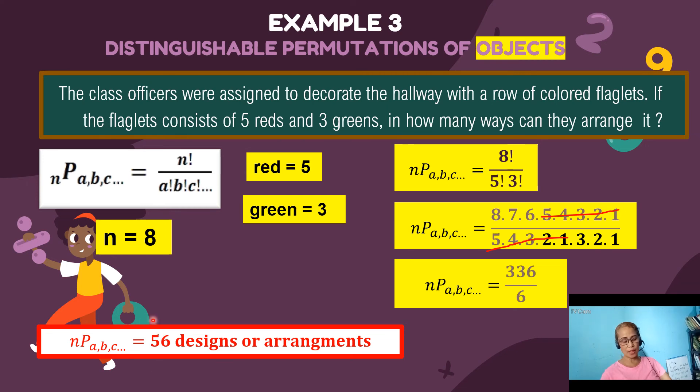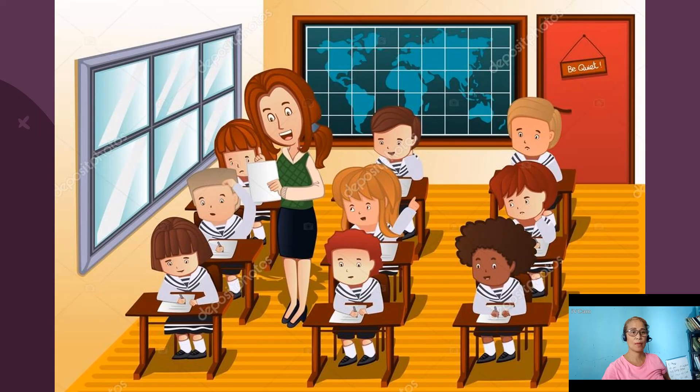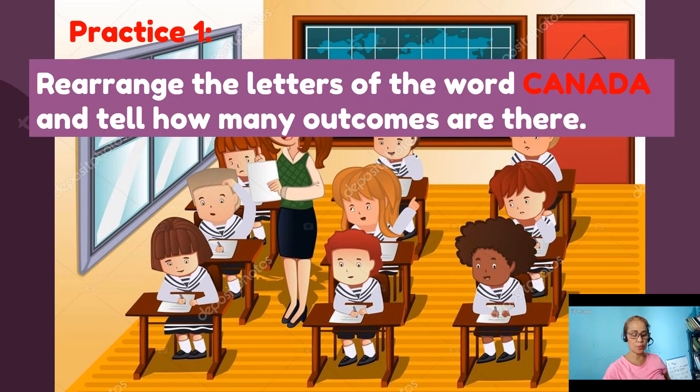So therefore, the class officers have so many choices of designing the hallway. There are actually 56 possible designs or arrangements that they can have. So we are now moving on to the practice exercises. The best way to check your understanding is by practicing on your own. So let's have this first example. Rearrange the letters of the word CANADA and tell how many outcomes are there.